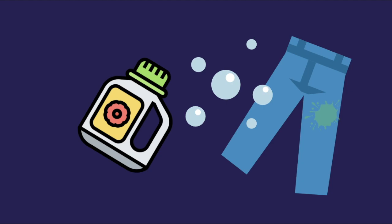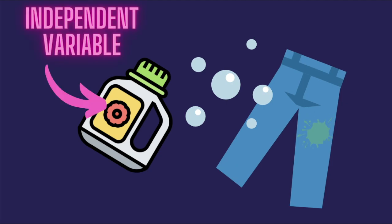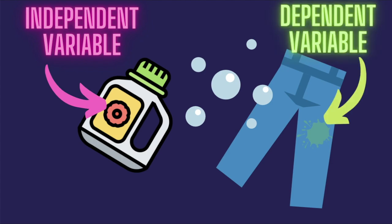The variable that the experimenter changes is called the independent variable. The variable or change that the experimenter watches for is called the dependent variable. One way to keep this organized is to think about the fact that the changes a scientist will watch for in an experiment will depend on what the experimenter did — and those changes are called the dependent variables.